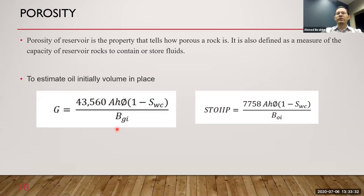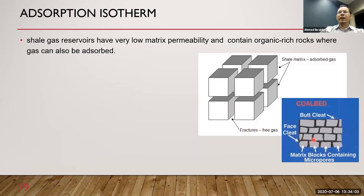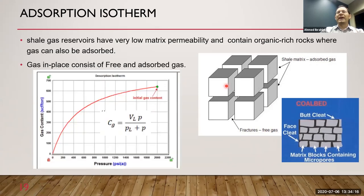Is this always the case for all reservoirs? Not for unconventional reservoirs. In shale or coal, it is usually a dual porosity system — we have a natural fracture system and very small pores within the matrix itself. The gas is stored as free gas in the natural fracture system and as adsorbed gas on the matrix. In coal, the adsorbed gas in place can be up to 90% of the total gas in place, making adsorption critically important.